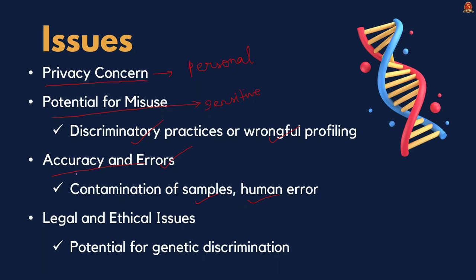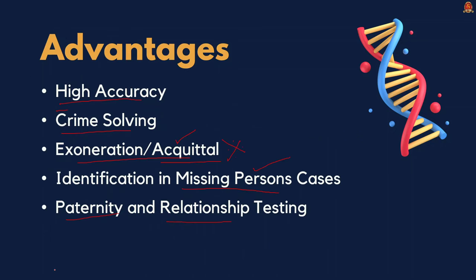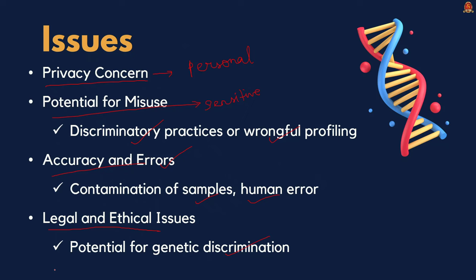Such errors can lead to false positives or false negatives, impacting crime investigation. Lastly, there are legal and ethical issues — legal and ethical questions arise about how DNA profiles should be used in criminal investigations and court proceedings. Issues include consent, the right to genetic privacy, and the potential for genetic discrimination. These are the important issues associated with DNA profiling. In this discussion we have seen the basics of DNA profiling, its advantages, and the issues associated with it.